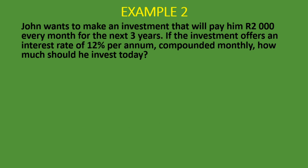In the second example, John wants to make an investment that will pay him 2,000 rand every month for the next three years. The investment offers an interest rate of 12% per annum compounded monthly. How much should he invest today? He wants to make one investment today that will enable him to receive 2,000 rand every month for the next three years, earning 12% per annum compounded monthly — so now we have compounding more than once a year.